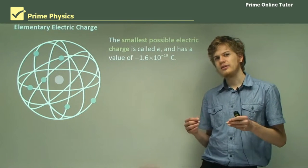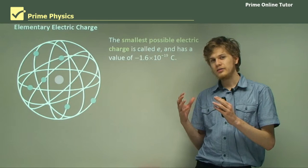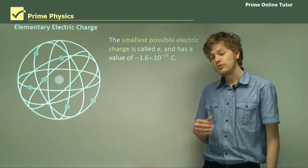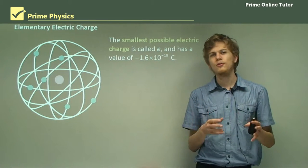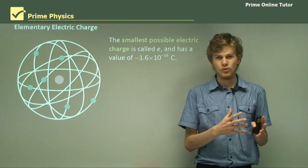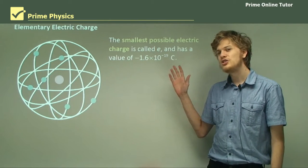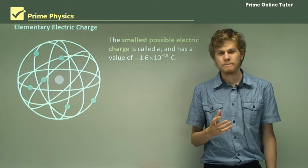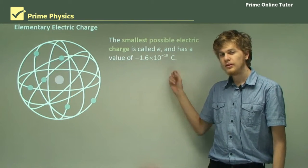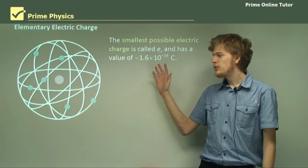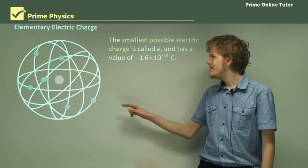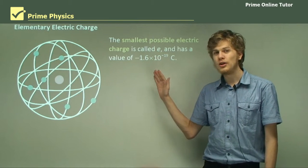It turns out that we can't get arbitrarily small charges. We can't pick a charge and get a charge that's closer to zero than the first charge. We can say that if we want to get closer to zero than one coulomb, all we need is half a coulomb, or a quarter of a coulomb. But there is a smallest possible charge that we can't get any smaller than. This value is called E, or the elementary charge, and it has a value of 1.6 times 10 to the minus 19 coulombs — a very, very small amount of electric charge indeed.